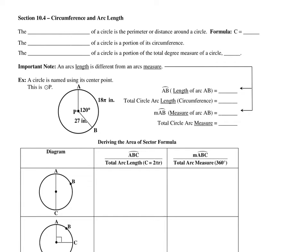Lesson 10.4: Circumference and Arc Length. The circumference of a circle is the perimeter or distance around the circle, and that formula is circumference equals 2πr.